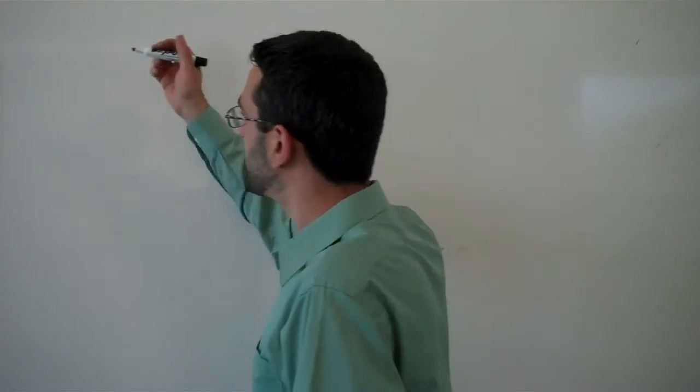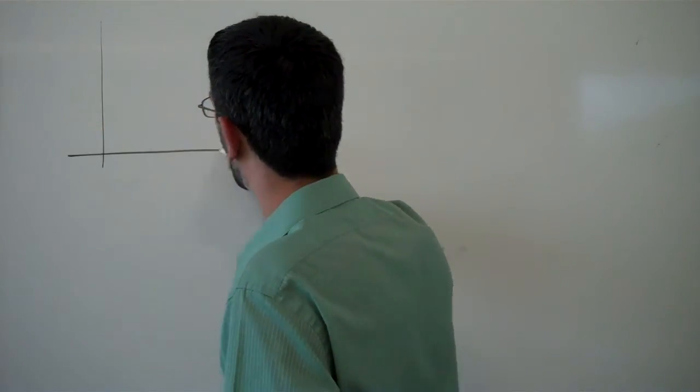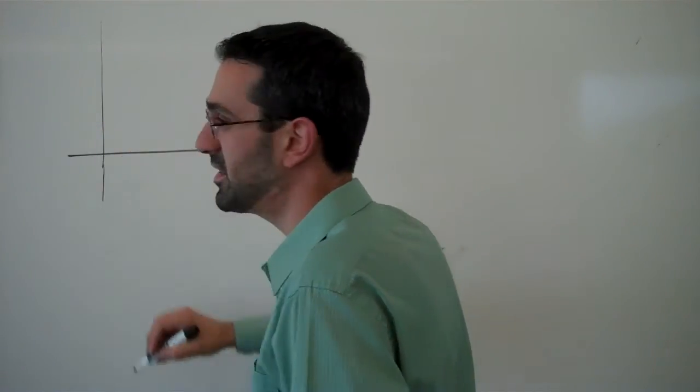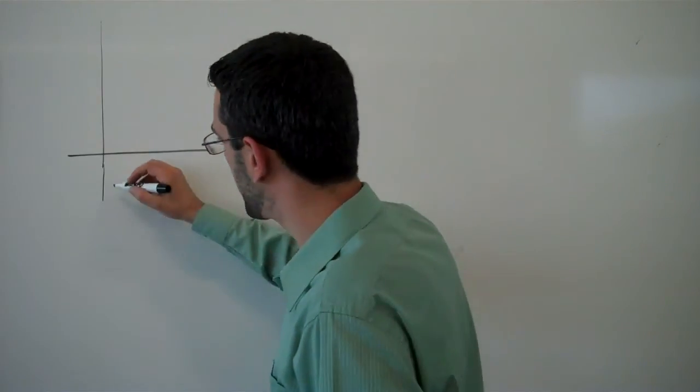So to see why slicing horizontally may be necessary or useful sometimes, let's look at an example where we find the area bounded by curves.